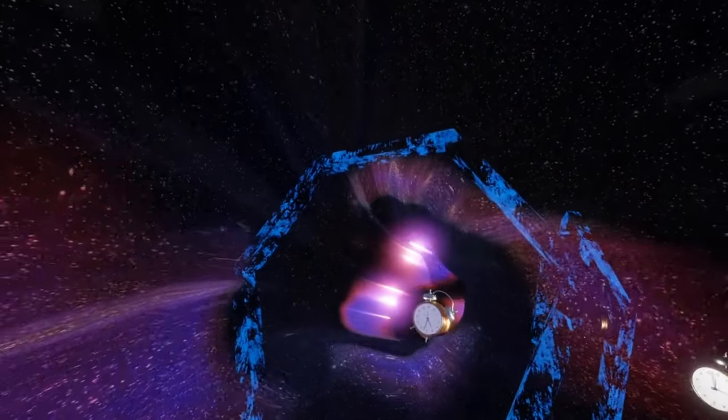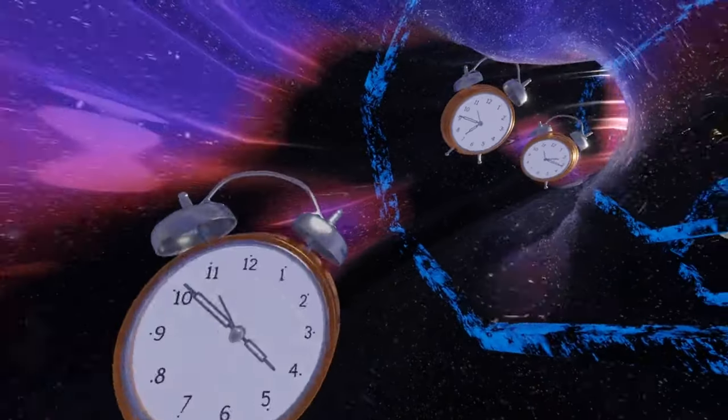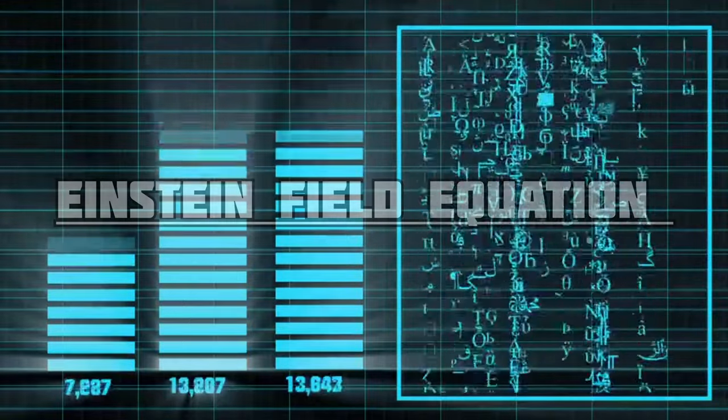This bending happens because of stuff like matter and light in the universe. This concept of time and space shocked the world and proved Newton's theory to be incorrect. The math that describes this bending is called the Einstein Field Equations.